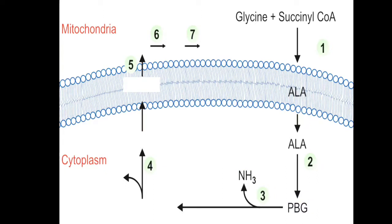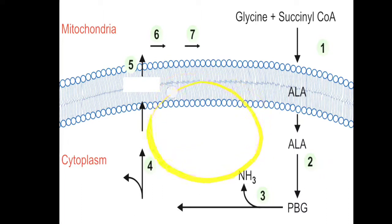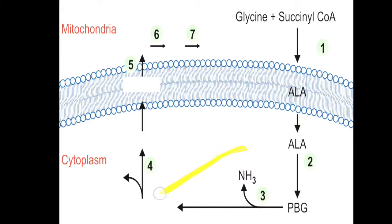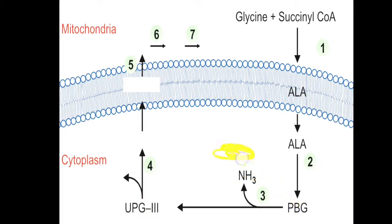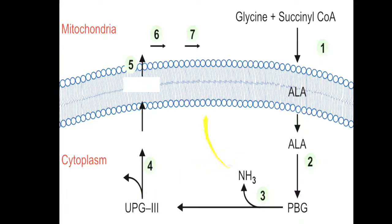Hydroxymethylbilane is a linear tetrapyrrole structure, but in heme there is a cyclic ring structure. So from HMB, uroporphyrinogen 3 (UPG3) is synthesized. Sometimes from HMB, UPG1 is synthesized, but it is not utilized for heme formation. So we already know that UPG3 synthesis is the relevant pathway.